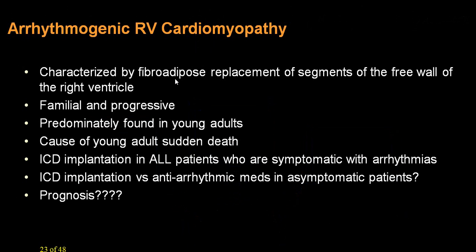On endomyocardial biopsy you can demonstrate fibroadipose tissue. It is progressive, there is a strong family history, it is present right from birth, and there is a chance of sudden cardiac death in young adults. ICD implantation should be considered in almost all patients who are symptomatic and in whom ventricular arrhythmias are demonstrated.